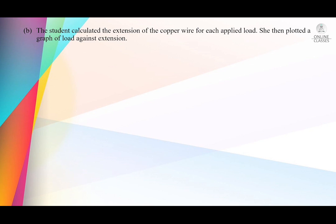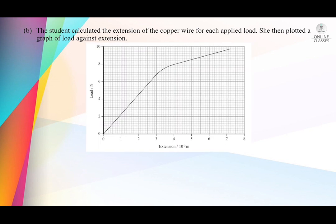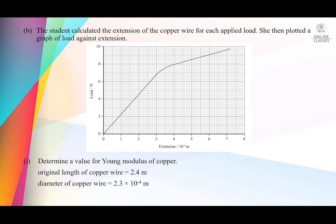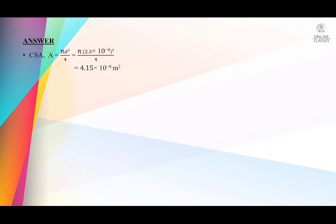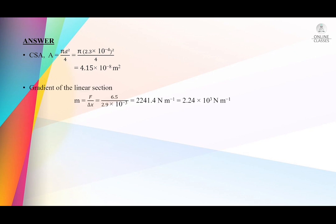The student calculated the extension of the copper wire for each applied load, then plotted a graph of load against extension. To determine Young's modulus: the original length is 2.4 m, diameter is 2.3 × 10⁻⁴ m. Cross-sectional area A = πd²/4 = 4.15 × 10⁻⁸ m². The gradient of the linear section m = F/Δx = 2.24 × 10³ N/m, which is also the stiffness constant.